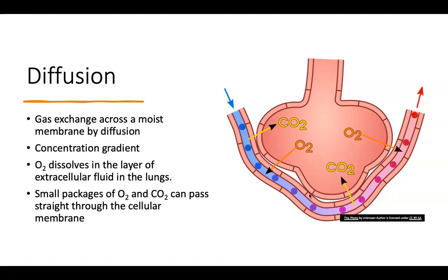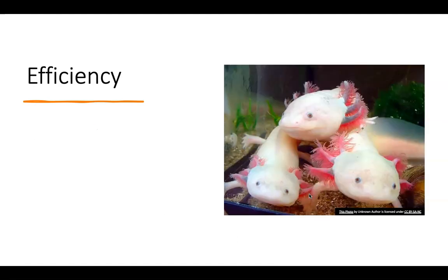So the oxygen dissolves into that layer of extracellular fluid. That's why we need to have a watery or a moist environment for this exchange to occur. The oxygen itself, the gas particles, dissolve into that fluid. Now, small packages of oxygen and carbon dioxide, when they're dissolved in that fluid, can pass straight across the cellular membrane as well. So it's a highly efficient way of this gas exchange to occur, as long as we have the right conditions for it to happen.